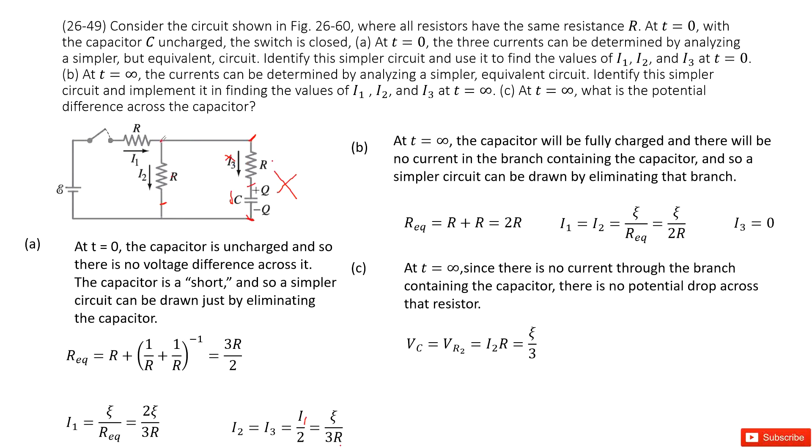So the voltage for the capacitor just equals these two points. And these two points come to there. It's just the voltage for the resistor R, this R. So this Vc just equals Vr2 equals I2 times R. The answer is there. Thank you.